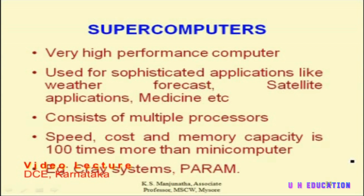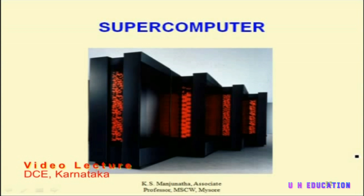As the name indicates, a supercomputer is the fastest type of computer — no other computer's speed can match it. Supercomputers are used in very specialized applications such as weather forecasting, satellite applications, communications, and medicines. Their speed, cost, and memory capacity are many times more than a minicomputer. Examples include the Cray system and India's PARAM supercomputer.